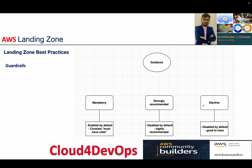In terms of how you implement the guardrails, we have three sets of options: mandatory, strongly recommended, and elective. Mandatory is obviously enabled by default and consists of must-have rules. Strongly recommended and elective are disabled by default, but if you are following best practices you should go with strongly recommended. Elective is more of a good-to-have. There are a number of guardrails that get pushed out when you go with AWS Landing Zone or Control Tower.